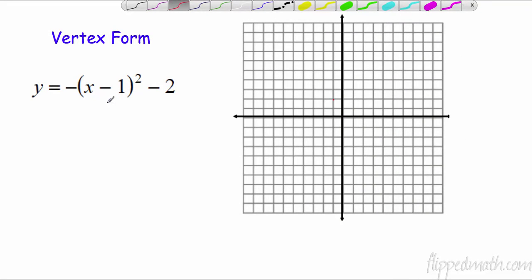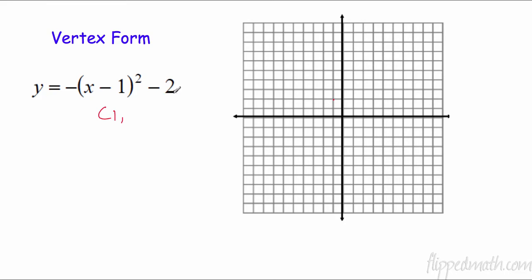In vertex form, we have our vertex right here. We can tell this is the opposite, so that's a positive one, and this is negative two, so I'm going to go over one, down two. My axis of symmetry is then at positive one, so x equals one. And since it's negative, it's going to open down.